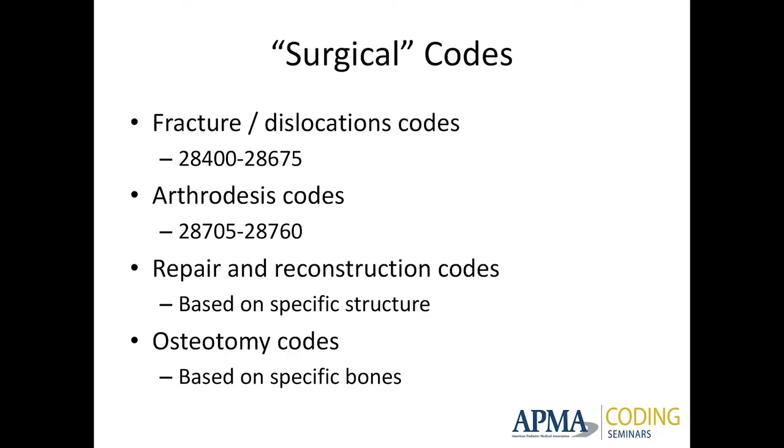Fracture dislocations: if a patient comes in with a fifth metatarsal fracture, on that initial visit you have an option. You can bill it as just an E&M — knowing you're going to see them in a couple of weeks and take serial x-rays until the fracture heals — or you can bill it as a fracture care code. There are fracture care codes for: without manipulation, with closed manipulation, with open manipulation, and with open reduction internal fixation. You have the option — you don't have to bill it as a fracture care code, but you can.